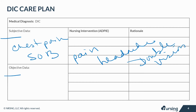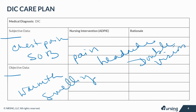Objective data may include erythema, warmth of the affected area, swelling, blood in the urine or the stool, petechiae, or uncontrolled bleeding.